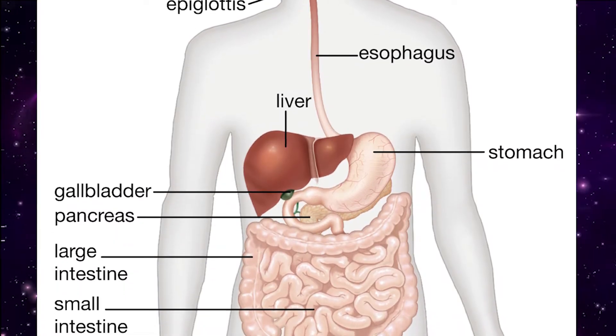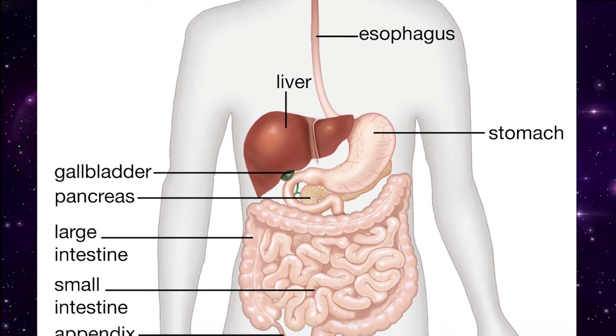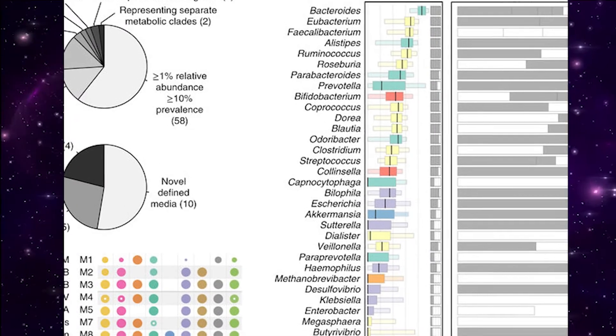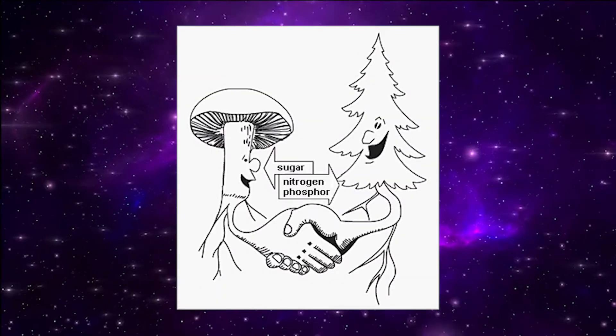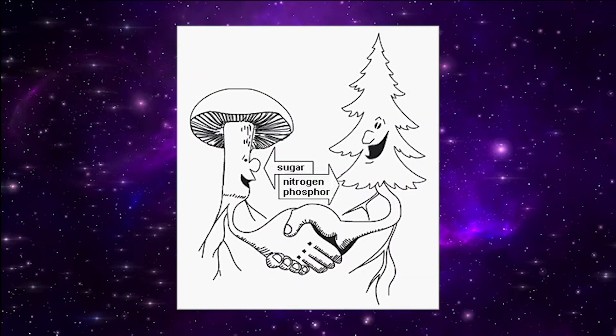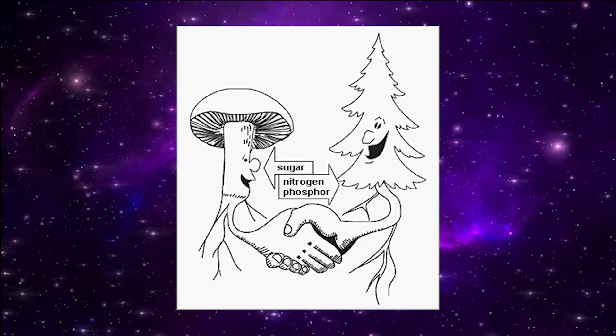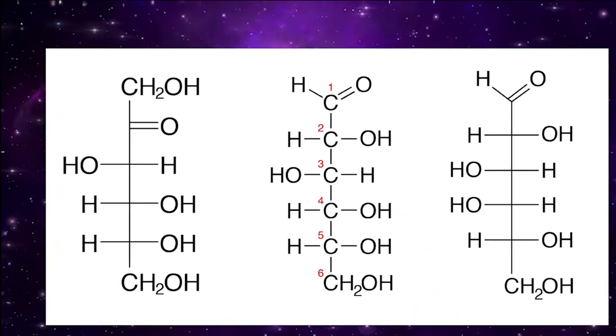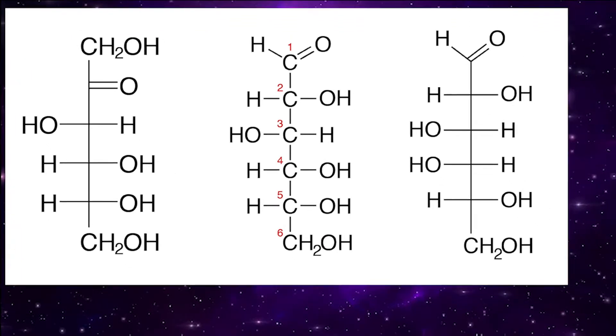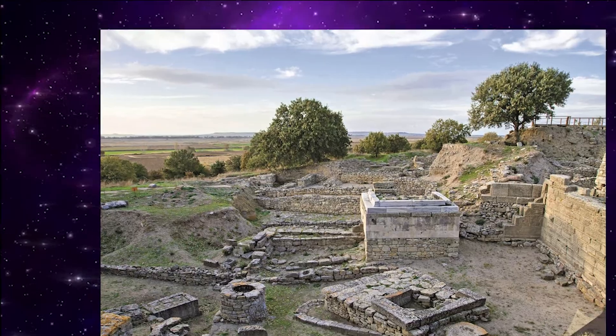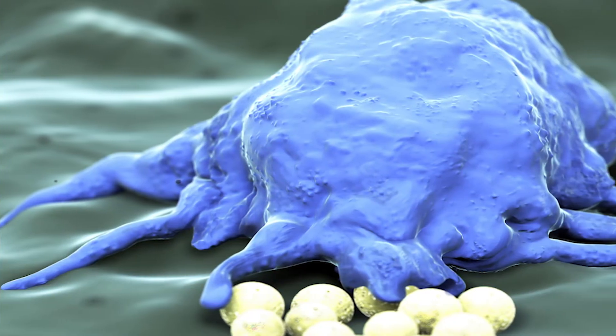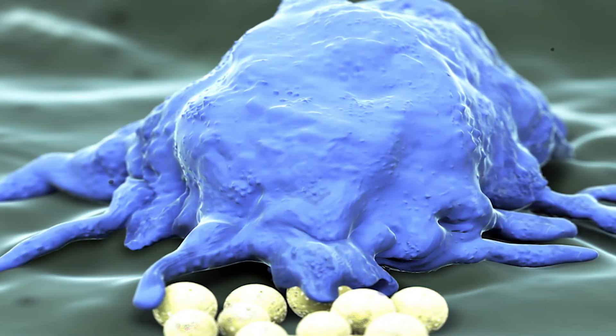In the gastrointestinal tract of a healthy human, there are about 300 to 1000 different species of bacteria living in a mutually beneficial relationship, a symbiosis. The bacteria receive nutrients and a safe place to form colonies because they're not getting targeted by the immune system.